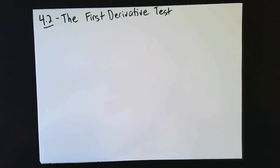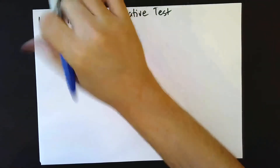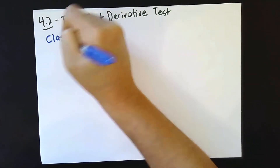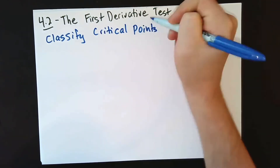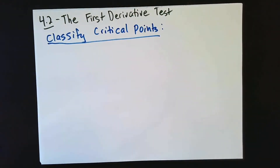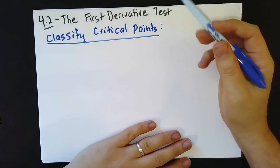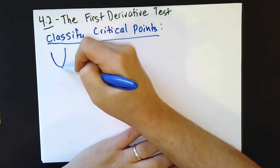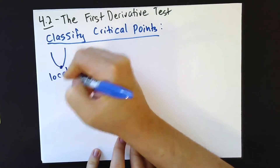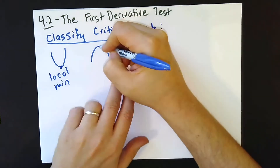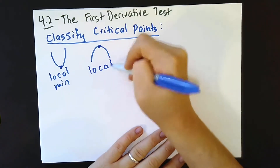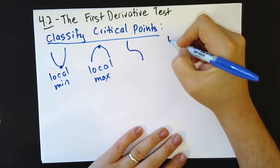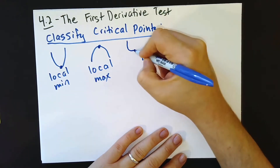The first derivative test actually exists to answer a bunch of different questions. The first type of question it can answer is to classify critical points. There are really three flavors of critical points: a critical point could look like a local min, a local max, or one of two kink shapes — in which case we call it a kink.